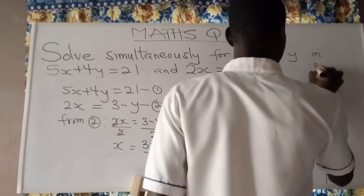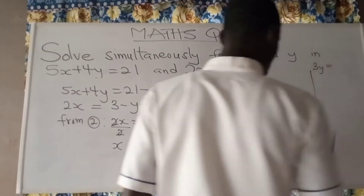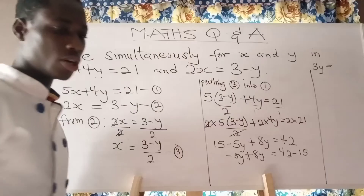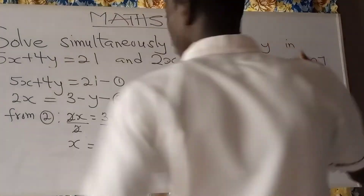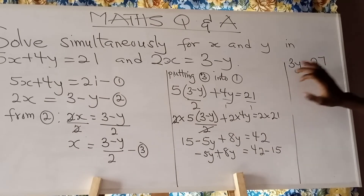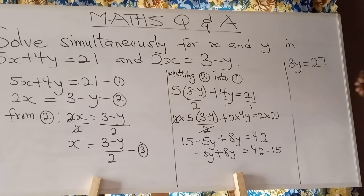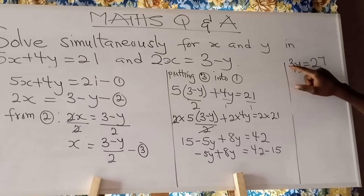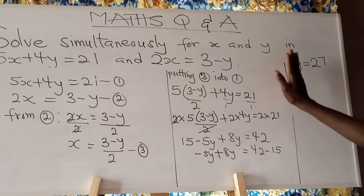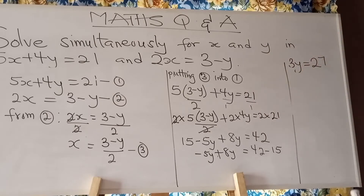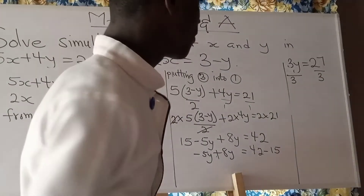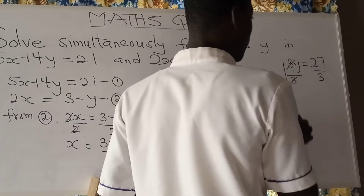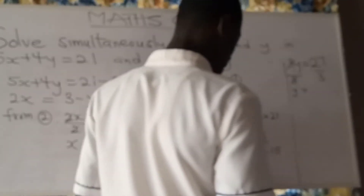Minus 5y plus 8y gives 3y. So we have 3y equal to 42 minus 15, which gives 27. We want y, not 3y. Since 3 is multiplying y, we divide both sides by 3. The 3 cancels on the left, and 27 divided by 3 gives 9. So y equals 9.